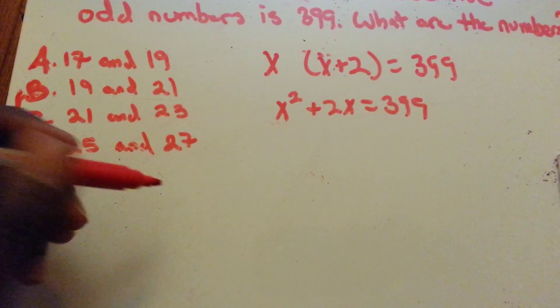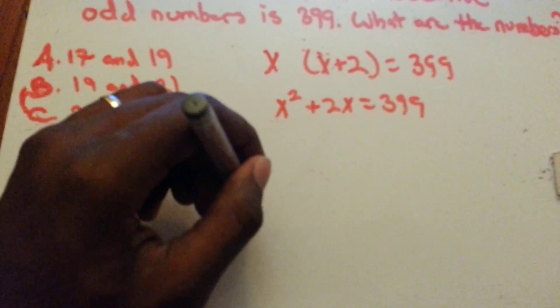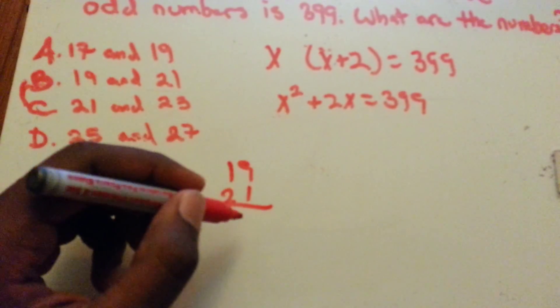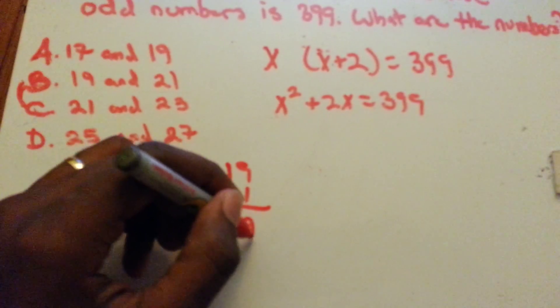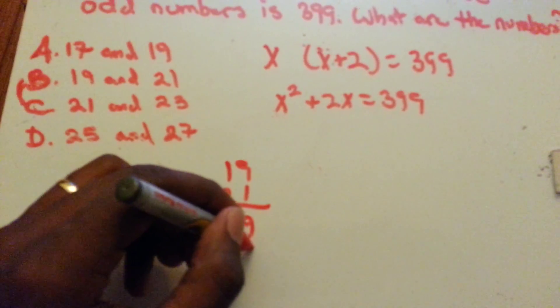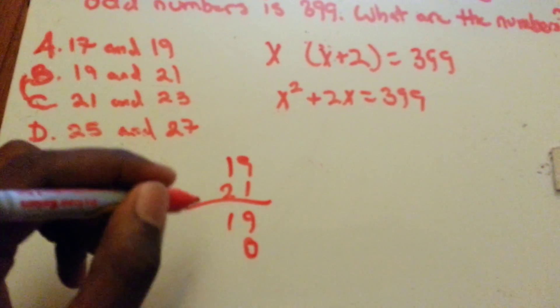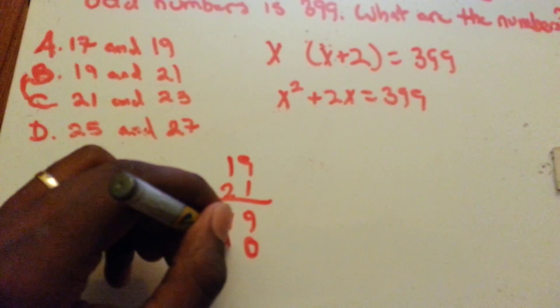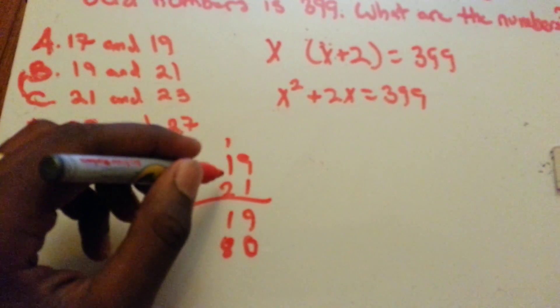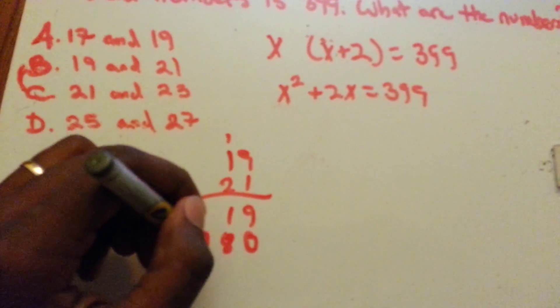I'll take the first one, 19 and 21. So 19 times 21: 9 times 1 is 9, 1 times 1 is 1, 0, 2 times 9 is 18, so 1, 2 times 1 is 2 plus 1 is 3.